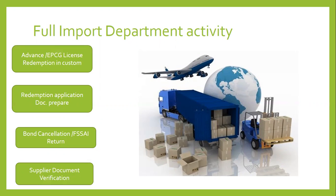Redemption application और document preparation — हमने license ले लिया और license में जितना export करना था वो भी हमने कर दिया। For example, हमने machine import की थी जिस पे duty बचाई थी 10 लाख। तो license के according हमें export obligation पूरा करना होगा — जिसमें duty save का 6 गुना export करना होता है, यानी 60 लाख। उसको exchange rate से divide करोगे, जो भी dollar amount बनेगा, उतनी foreign currency India में लानी होगी — तब आपका export obligation पूरा होगा।